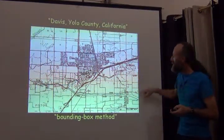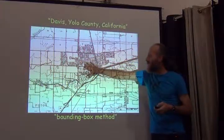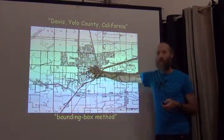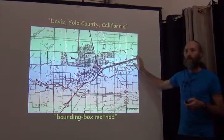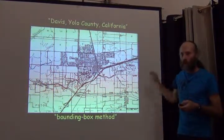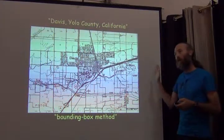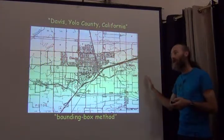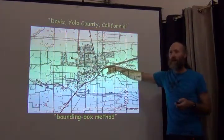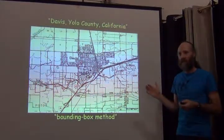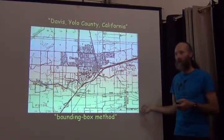That puts us in the neighborhood of a place called Davis, in California. We're going to put a box around it, so we're no longer putting a point. Our box contains the entirety of the town of Davis. So we have a measure of the spatial extent, expressed as a bounding box.